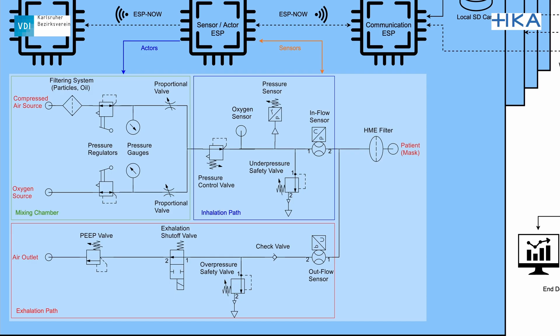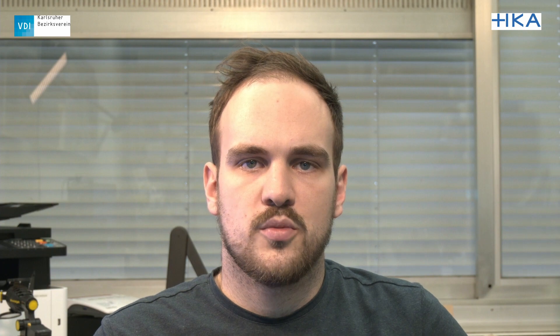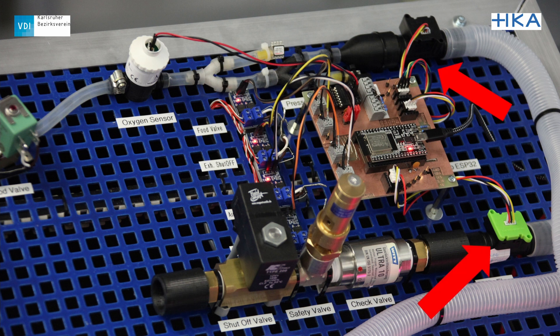There are some more components in our prototype that serve to ensure the safety of the patients. These include the over-pressure valve as well as the under-pressure valve, which allow the patient to cough or breathe in at any time. There is also an alarm controller which monitors the respiration values and functionality of other controllers. Furthermore, two flow sensors are installed for later respiration modes such as assisted ventilation, measuring airflow during inhalation and exhalation.